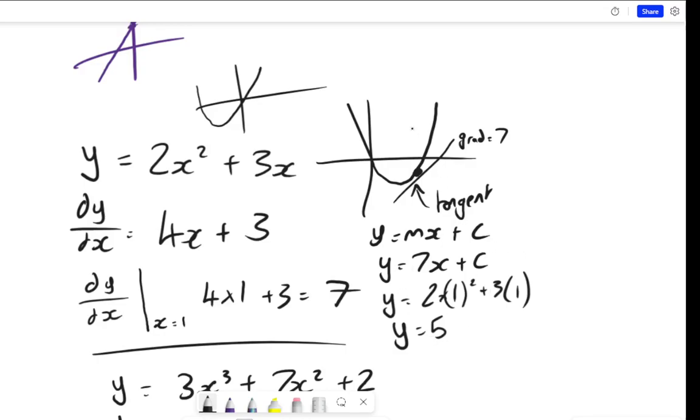So we can sub these two bits in to find c. So 5 is equal to 7 times 1, because x is 1, plus c. 5 is equal to 7 plus c. So c must be equal to negative 2. So therefore, my final answer will be the equation of this tangent is going to be y equals 7x minus 2. And that will be the equation of the tangent at that point.